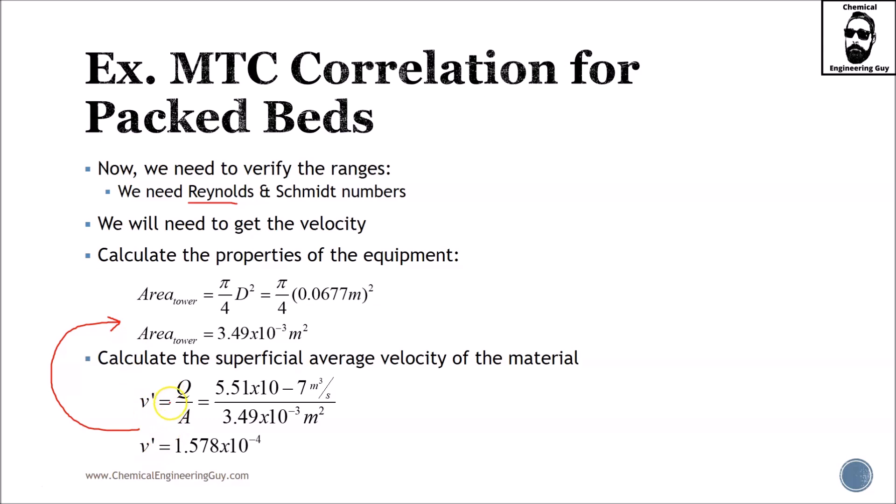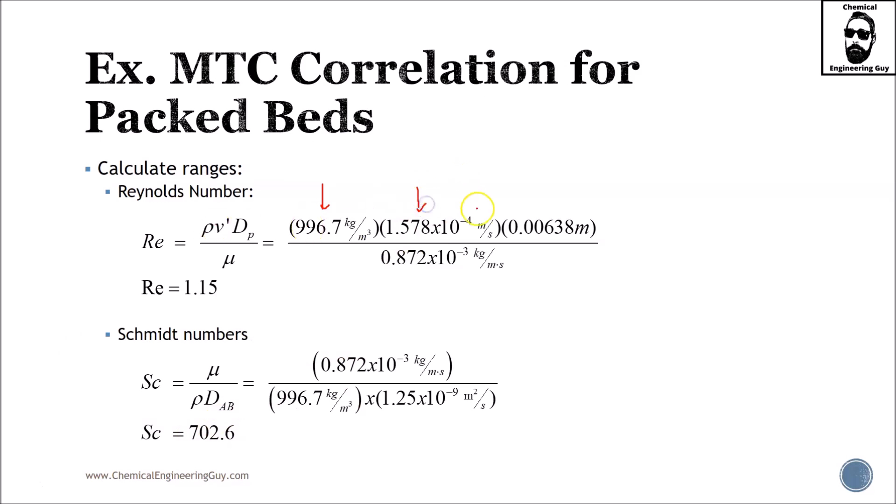I know that velocity of the fluid is equal to the volumetric flow rate divided by the area of the flow. And the area is essentially the diameter of the tower. So area of any circle will be π/4 times diameter squared. I get the area, then volumetric flow rate divided by area, and you get meters per second. Now that I have velocity, I have the density, the diameter of the particle - that's very important, not the diameter of the tank - and the viscosity. We have ensured our Reynolds number, which in my opinion is very low.